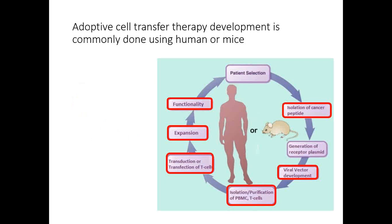This circular process shows the steps of ACT development: patient selection, isolation of cancer peptide, generation of receptor plasmid, viral vector development, isolation of PBMC T cells, transduction of the T cells, expansion, functionality testing, and back to the patient. We are going to look at different examples in these steps, focusing on how each step requires measurement of cell count and viability.